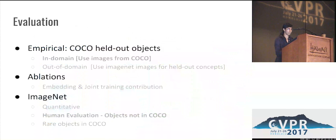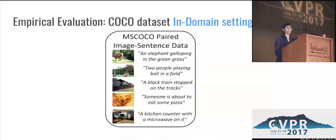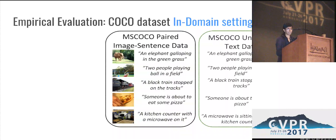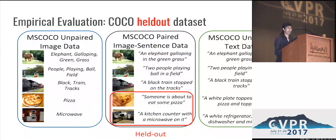In our paper, we report multiple experiments to evaluate our model. I will focus on three main things: first, the in-domain setting where we hold out some objects from the COCO dataset; second, results on a couple of important ablations; and third, results on human evaluations on the ImageNet dataset. For empirical evaluation in the in-domain setting, we look at the MS COCO dataset containing pairs of images and captions. We create a held-out dataset by holding out certain concepts or objects — specifically, image caption pairs pertaining to certain objects from the COCO dataset — and use this for evaluating the model while training on the remaining data.